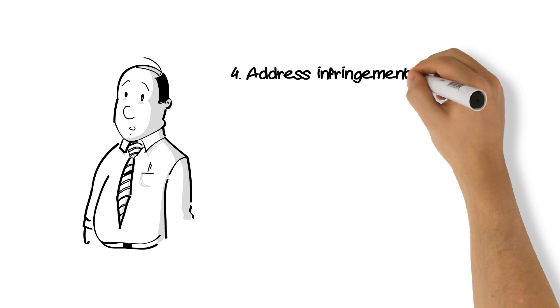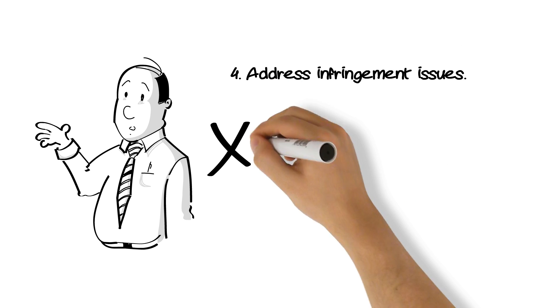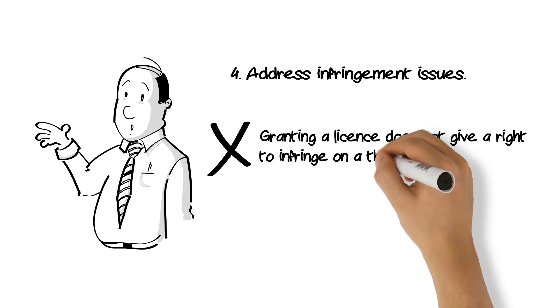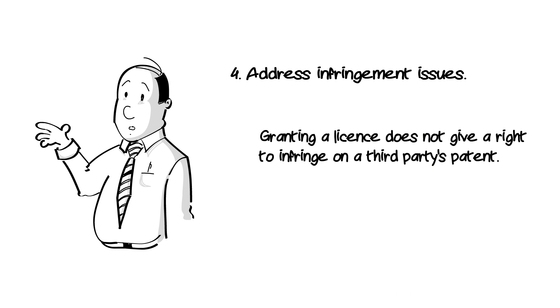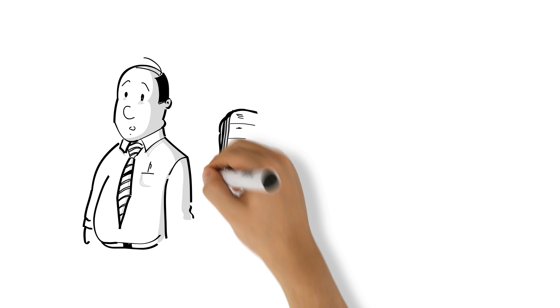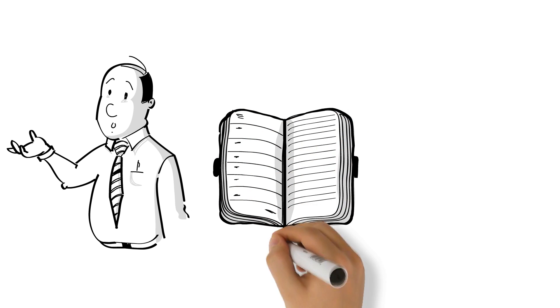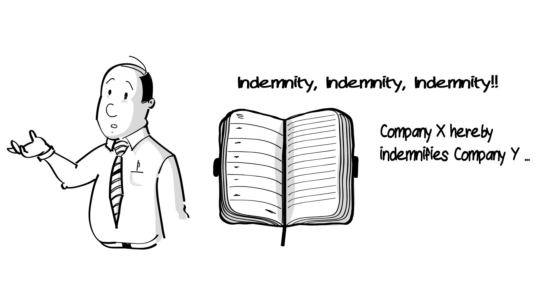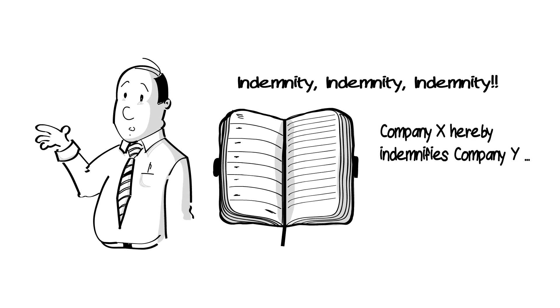Address infringement issues. It's important to state that granting a license does not give a right to infringe upon any third-party patents. Having an indemnity clause is useful in case someone accuses you of inducing your licensee to infringe upon their patent. It also acts as a real deterrent against such behaviour.